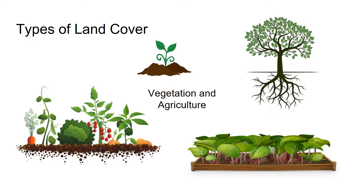Different types of land cover have different effects on the movement of water in the hydrologic cycle. For example, vegetation like trees, grass, plants, and crops can slow the flow of water and allow part of it to infiltrate or seep into the soil.